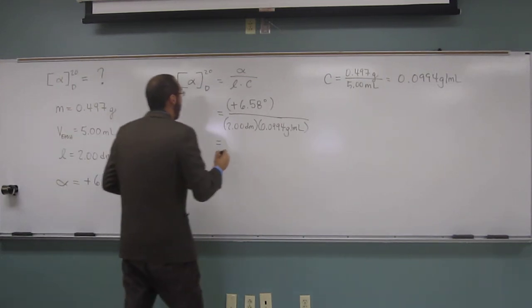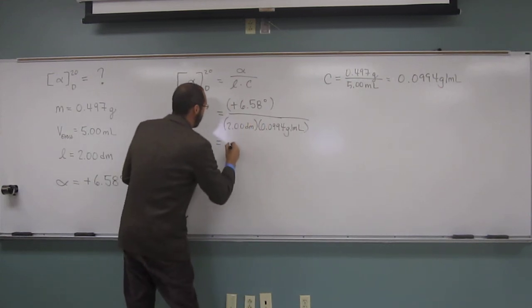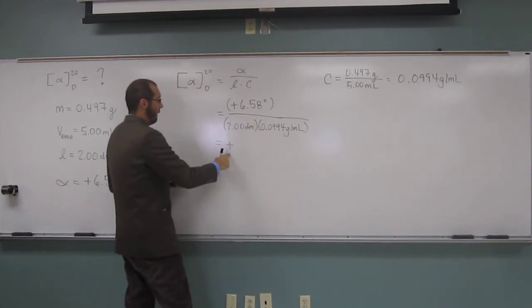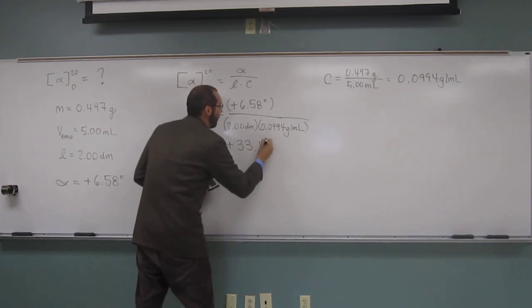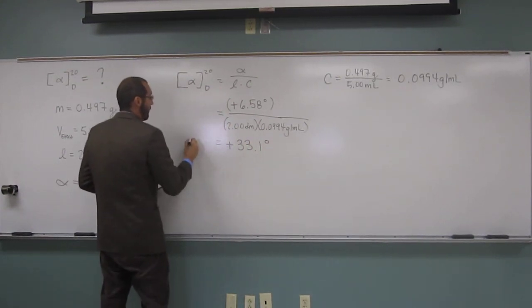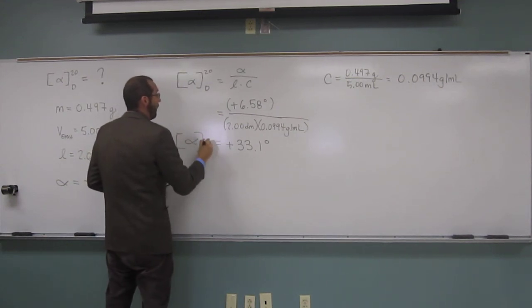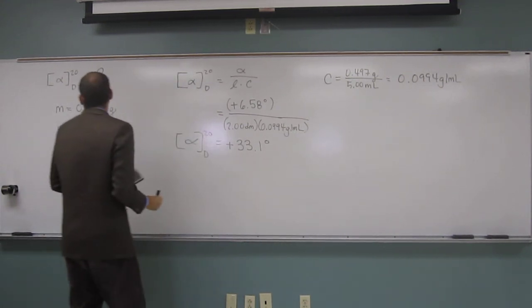And this is going to go to three significant figures. Remember to put the plus there: plus 33.1 degrees. So this is going to be the specific rotation of, what was this, valine, right?